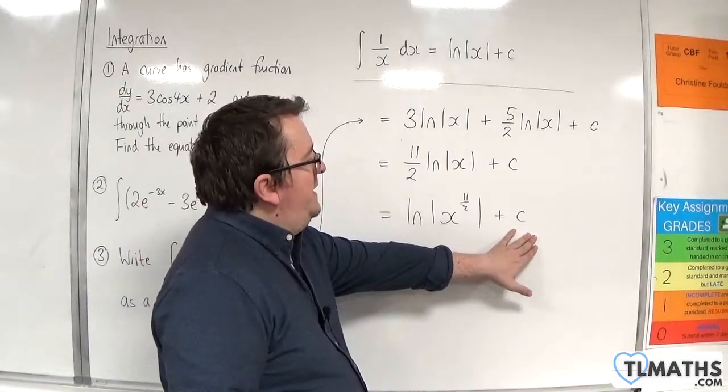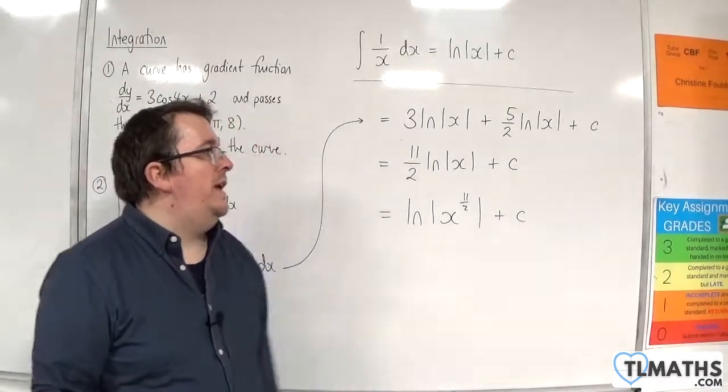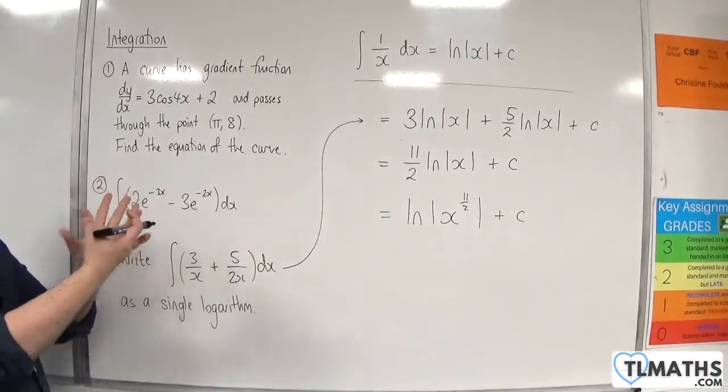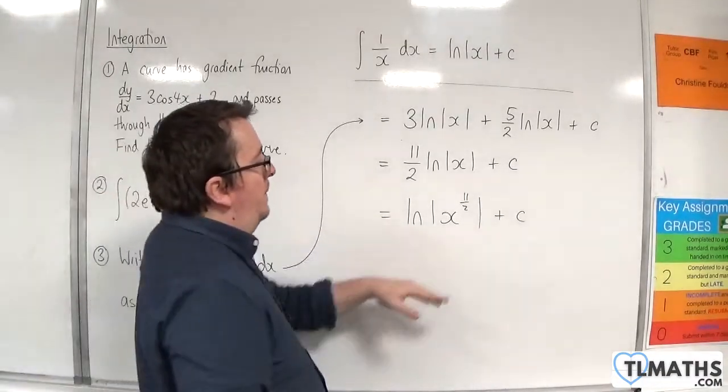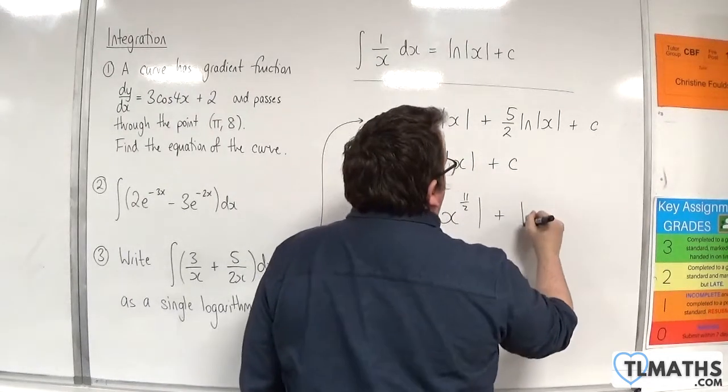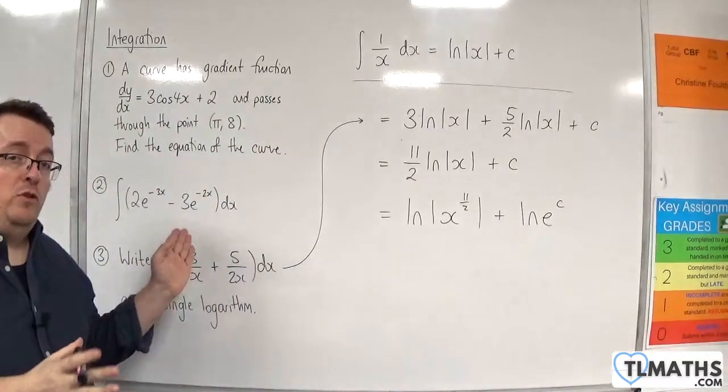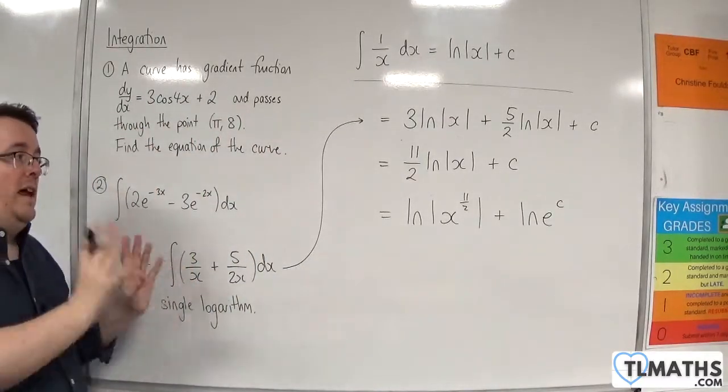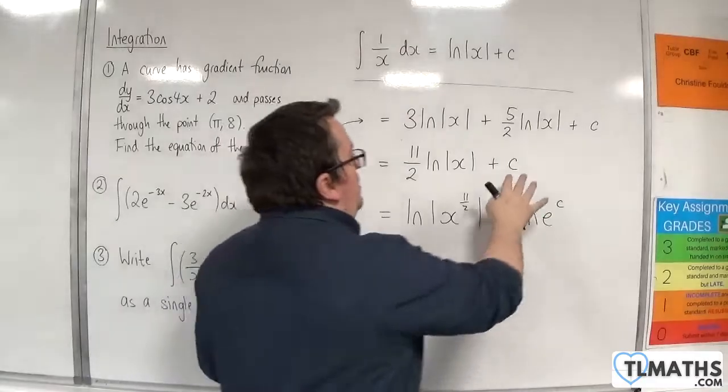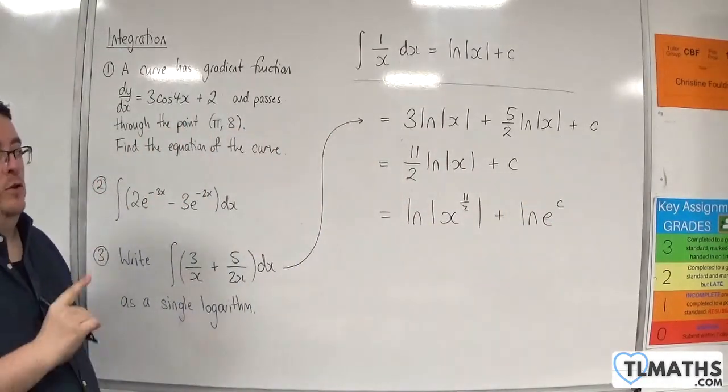I need to write this all as a single logarithm, so I need to write the c as a log in order to bring it into this logarithm here. We know that we can replace c with the natural log of e to the c, because the natural log and e cancel one another. They are inverse functions of one another.